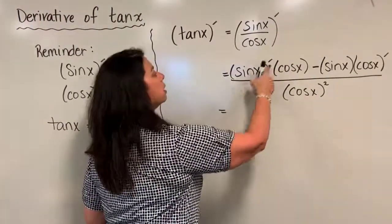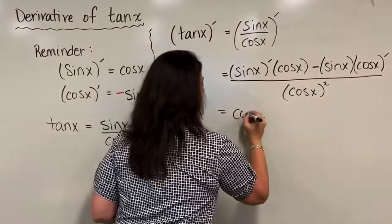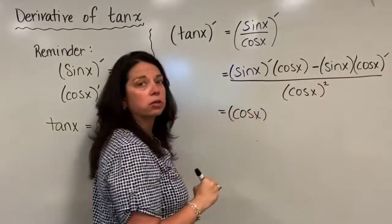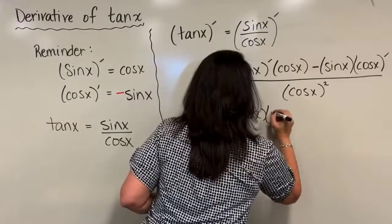So I can replace this derivative of sine x with cosine x. But note I already have a cosine x right next to it. No biggie, I'm just going to write it down. I now have cosine x times another cosine x.